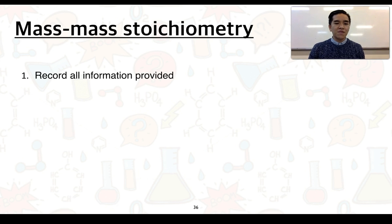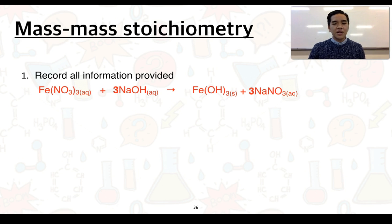Let's firstly record all the information provided. So, from our balanced equation, we have the concentration of our iron-3 nitrate solution, 2.00 moles per liter.